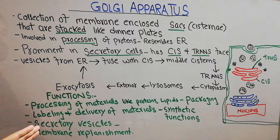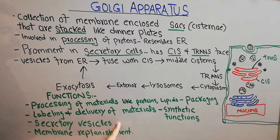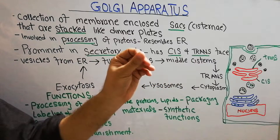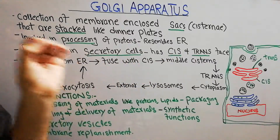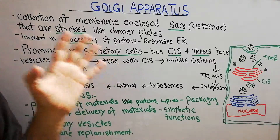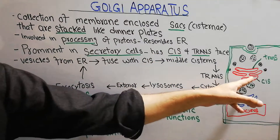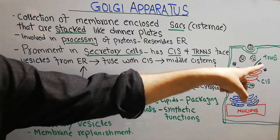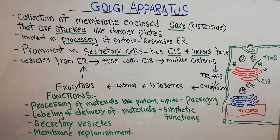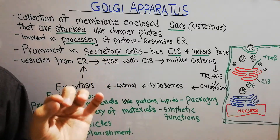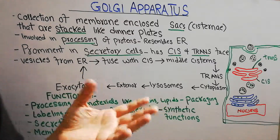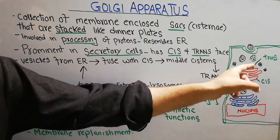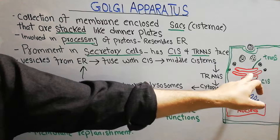The Golgi apparatus also has secretory vesicles and secretory functions. Organs like the pancreas or endocrine organs which release their enzymes or hormones directly into the blood have a lot of active Golgi apparatus. The synthesis of those enzymes and the secretion of those hormones — for example insulin from the pancreas, or pituitary hormones — is basically made by the endoplasmic reticulum, packaged in the Golgi apparatus, and then secreted from the cell.